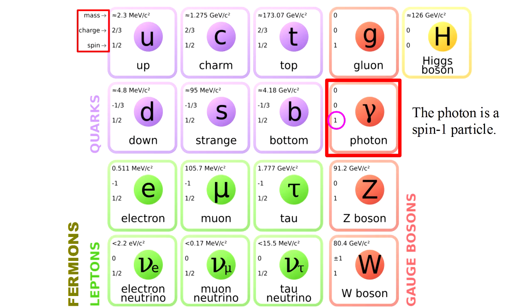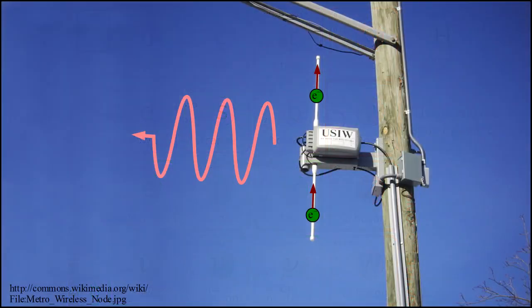The photon is a spin one particle and that spin manifests itself as circular polarization. But what about linear polarization? We use that all the time in radio systems. How do we get linear polarization if photons are circularly polarized?